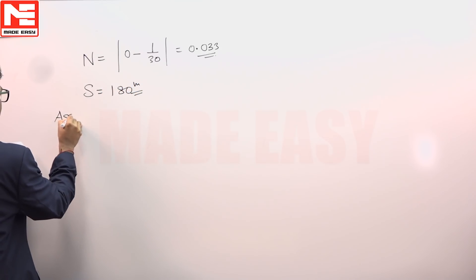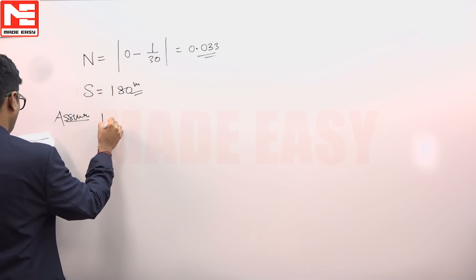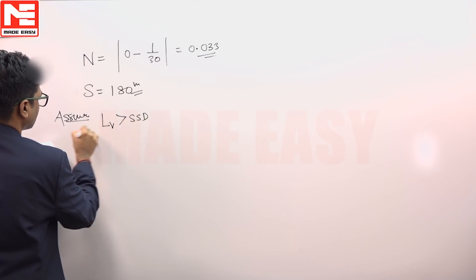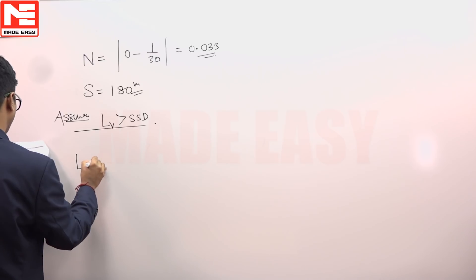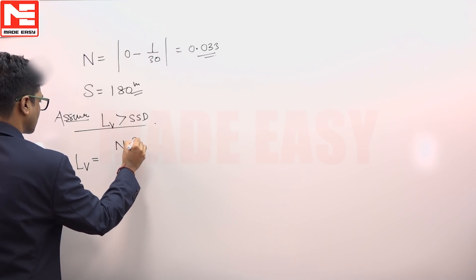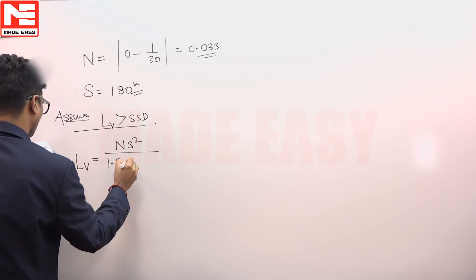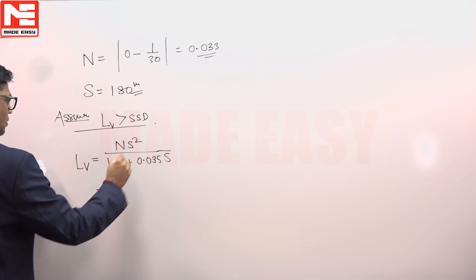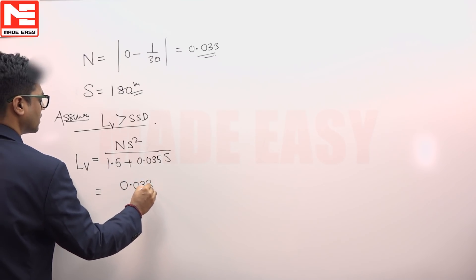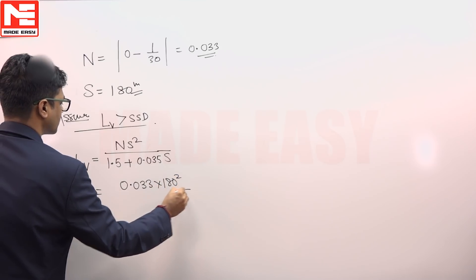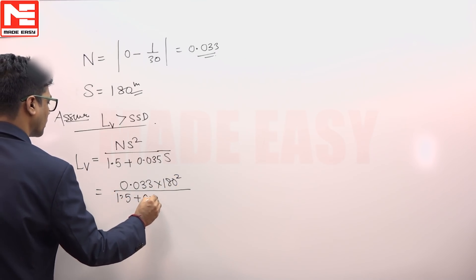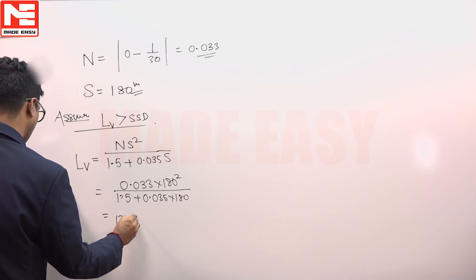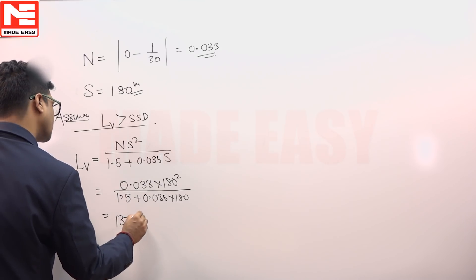So we will have to first assume length of valley curve is more than SSD. As per this, length of valley curve is equal to N S squared divided by 1.5 plus 0.035 S. So the value of N 0.033 into 180 squared divided by 1.5 plus 0.035 times 180. After calculation this is 137.1 meter.